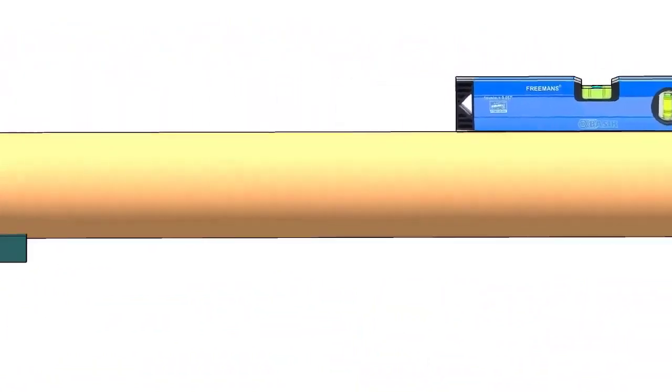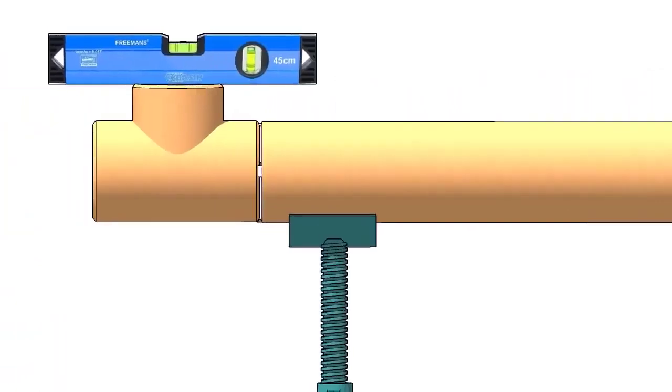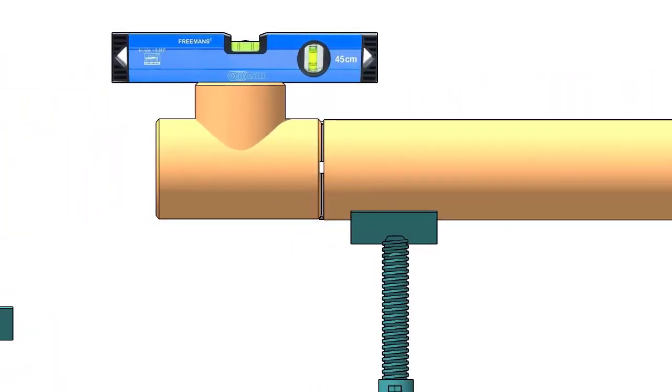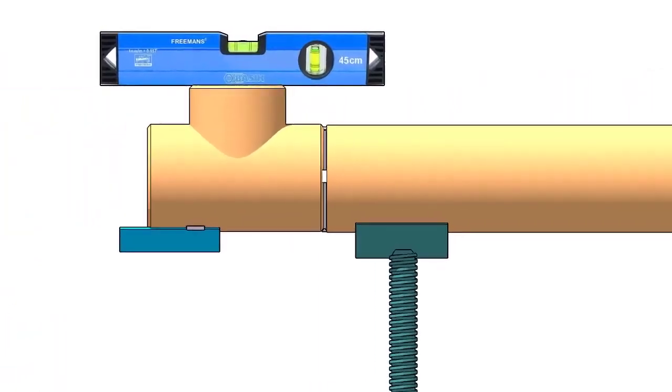Mark the center lines of the T and the elbow. Tack weld the piece of angle below the T if you don't have a ready-made pipe clamp.